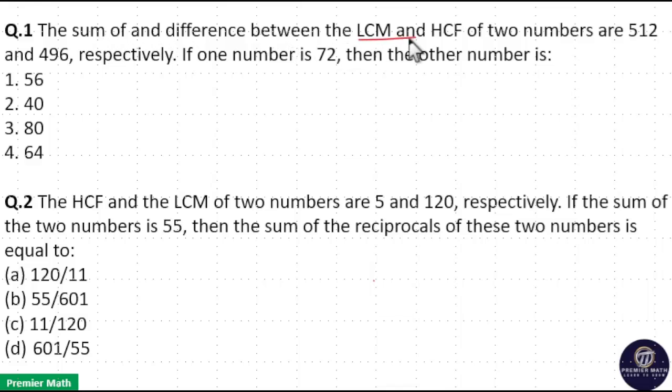The sum and difference between the LCM and HCF of two numbers are 512 and 496, respectively. If one number is 72, then the other number is? The important thing here is that the product of two numbers is equal to the product of their HCF and LCM.